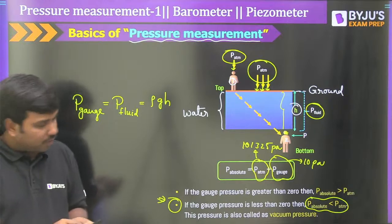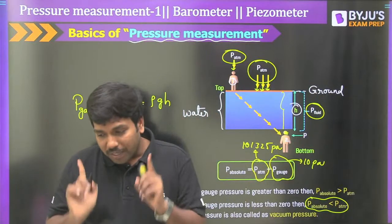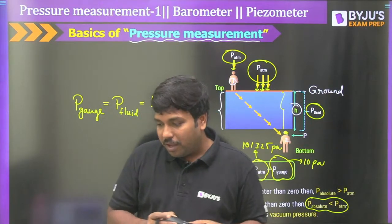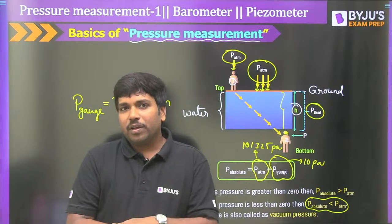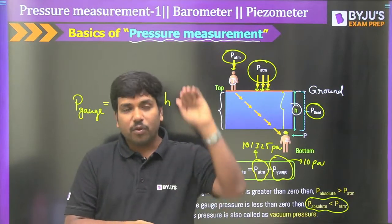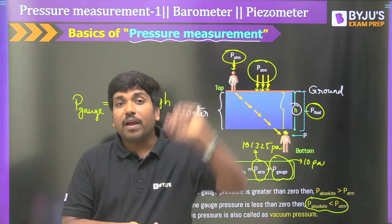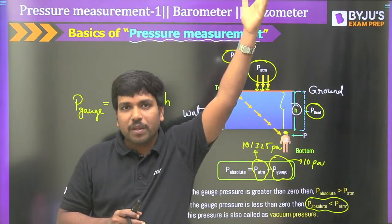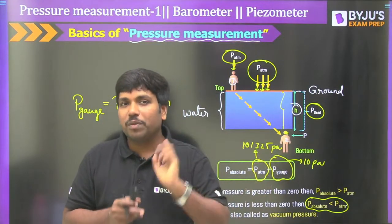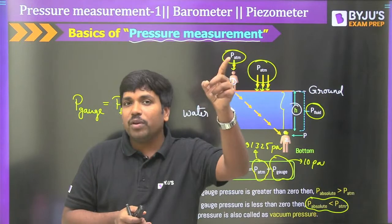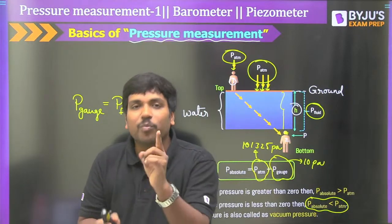If you are in space, the absolute pressure is less than atmospheric pressure because gauge pressure is negative — vacuum condition. If you are underwater, gauge pressure is positive because rho, g, and H are all positive quantities, so absolute pressure is greater than atmospheric pressure. These two scenarios — space (negative gauge pressure) versus underwater (positive gauge pressure) — illustrate the key difference.